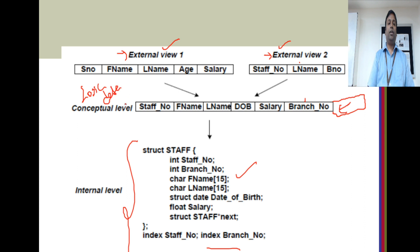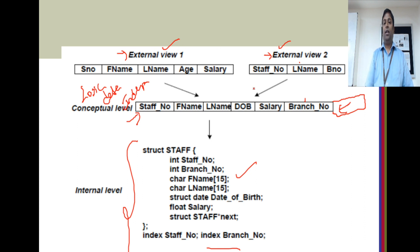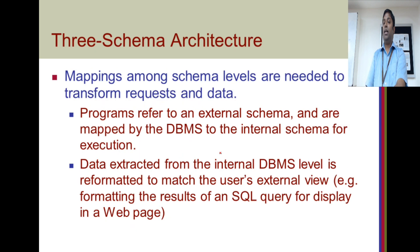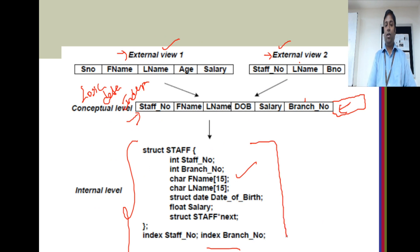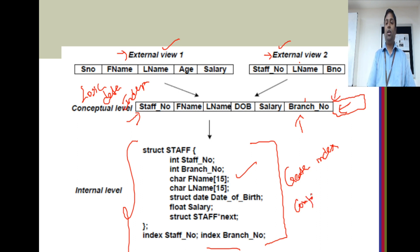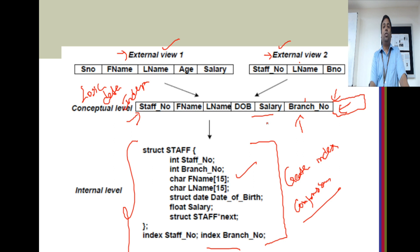Likewise, there is physical data independence. If I go and change anything at the internal level, there is no need to change the conceptual schema. For instance, if I go and create an index for faster retrieval, there is no need to change the conceptual schema. If I run a compression algorithm and compress my data in the database, it doesn't mean I have to change my conceptual schema. This is called physical data independence — if I change the internal level, there is no need to change the conceptual level.